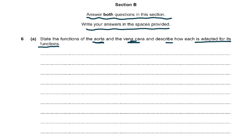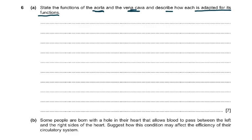You have to explain how each vessel is adapted for its function. For the aorta: it carries oxygenated blood — that's one mark. It arises from the left ventricle and takes blood to the rest of the body — second mark. It has thick walls — third mark. It has elastic tissue and muscle tissue in its walls — another mark. The elastic tissue recoils so the lumen can stretch, and blood is carried at high pressure. At the base of the aorta there is a valve to prevent blood returning to the heart.